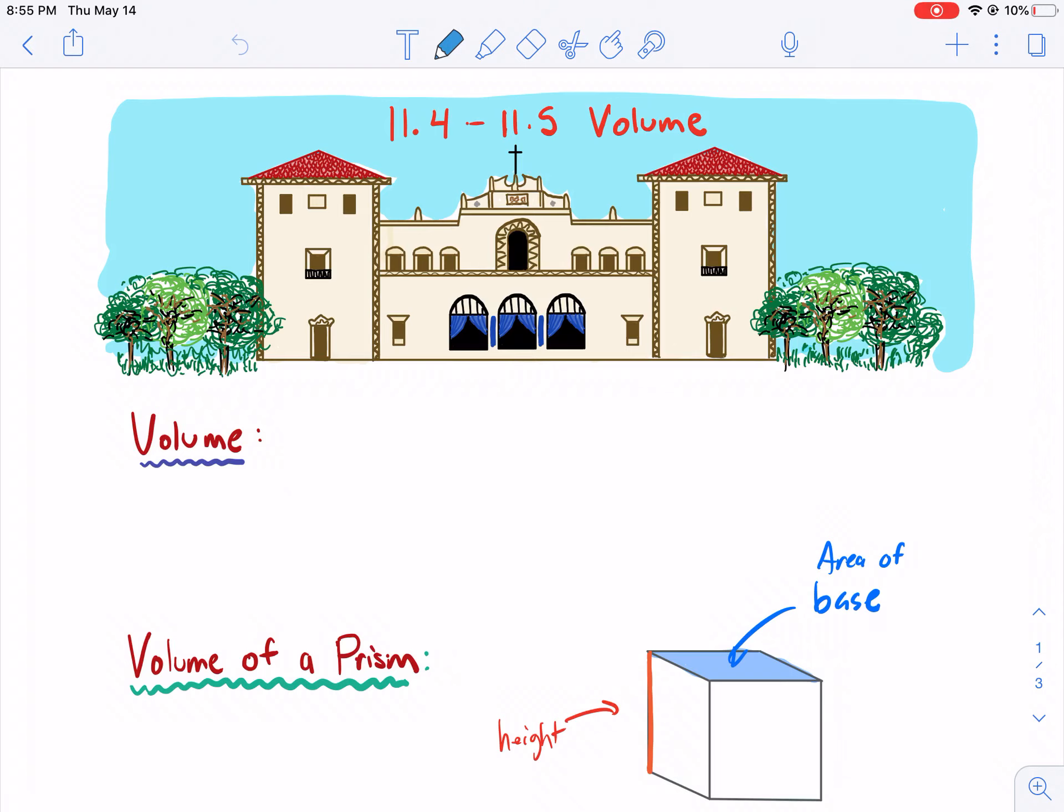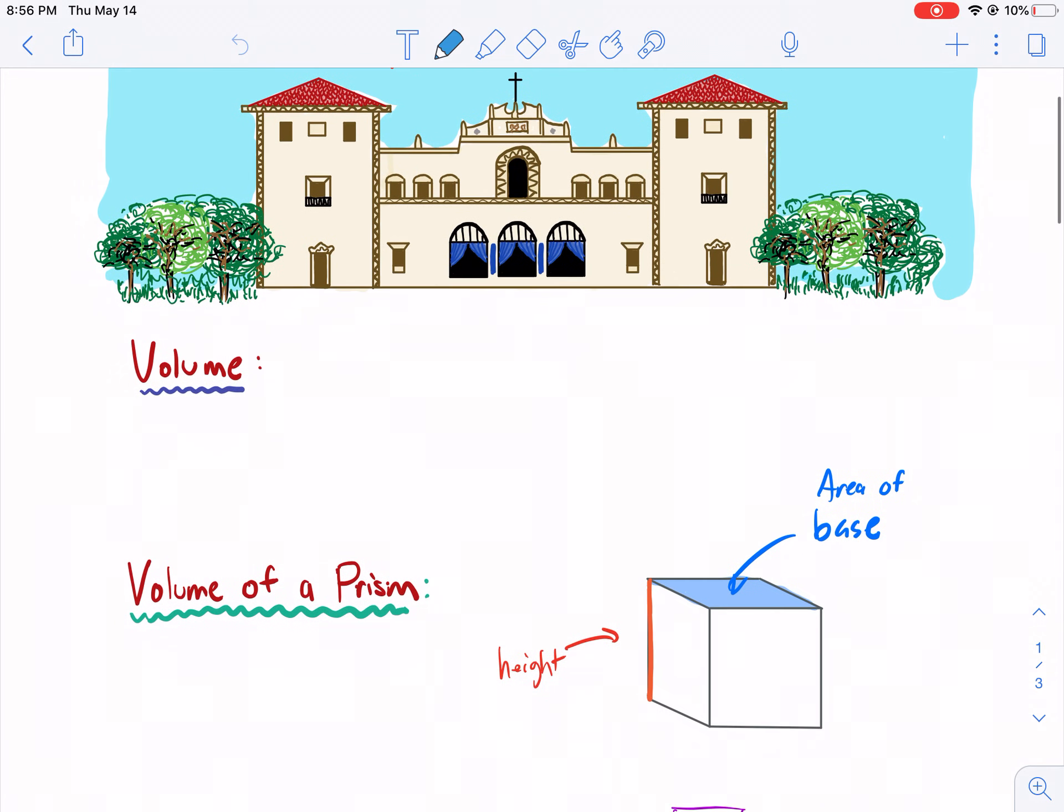Welcome back to another episode of West Explains Best. We're doing geometry today, specifically section 11.4. We're getting into volume.